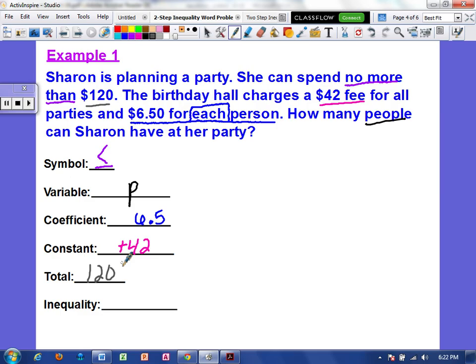And then we know that our total is $120 because that's the total that she has to spend. So if I were to write this out, I would say 6.5 times P plus 42 has to be less than or equal to 120. So we're going to go ahead and solve that.